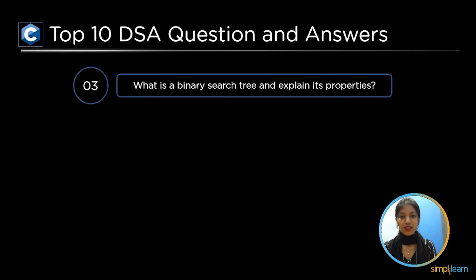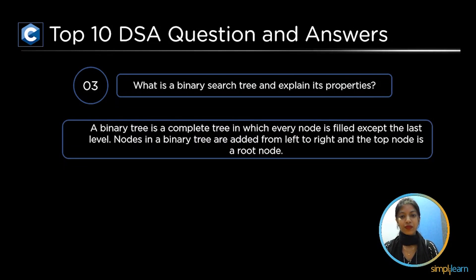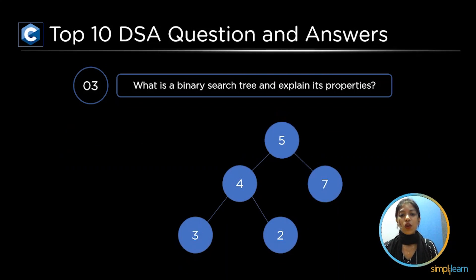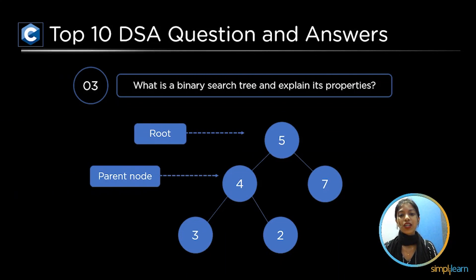The top third question is what is a binary search tree and explain its properties. A binary tree is a complete tree in which every node is built except the last level. Nodes in a binary tree are added from left to right. The topmost node is a root node of a tree and the subtree consists of a parent node and a child node.